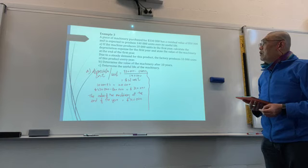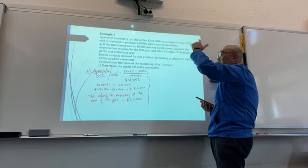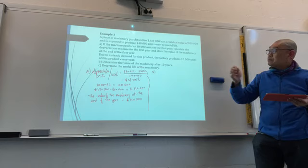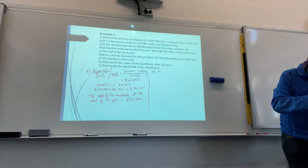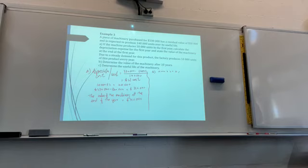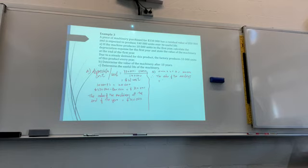For part B, the machine produces 10,000 units every year. So over 10 years: 10,000 × $2 × 10 = $200,000 total depreciation. Therefore, the value of the machinery after 10 years = $330,000 − $200,000 = $130,000.